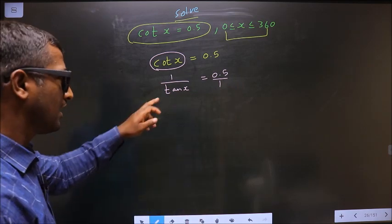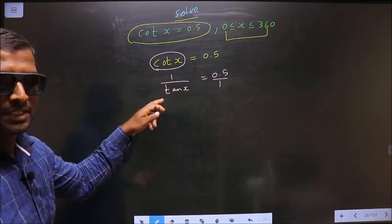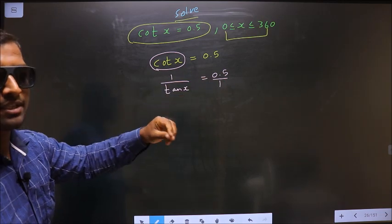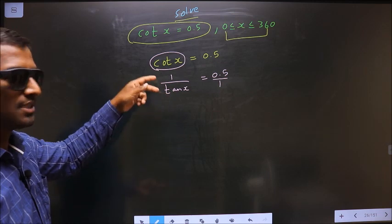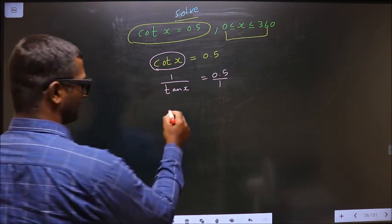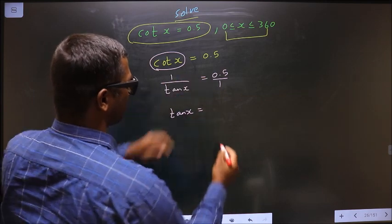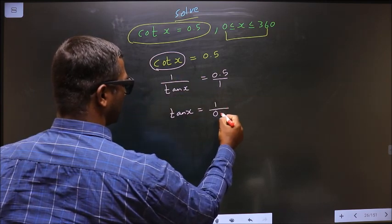Now tan x should be the subject. For that to happen, we should do reciprocal on both sides. So when we do the reciprocal, we get tan x equal to 1 by 0.5.